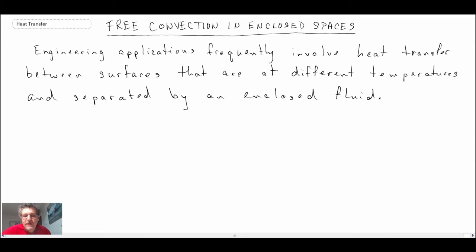When we're looking at free convection in enclosed spaces, essentially what we're looking at is two surfaces—they could be vertical or they could be horizontal—where there's a temperature differential between those two surfaces and there is a fluid between them.